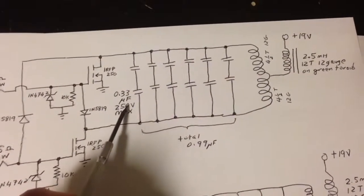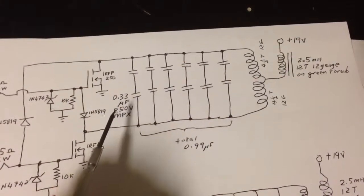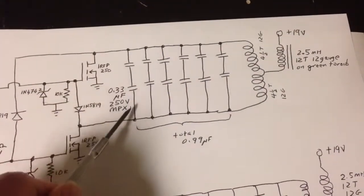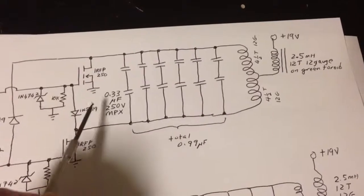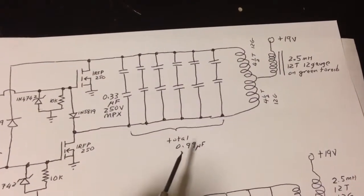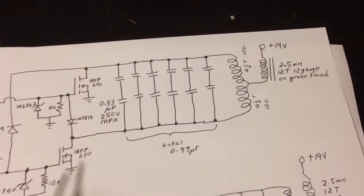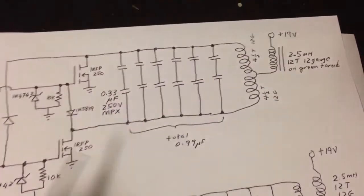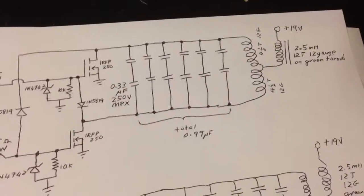These are 0.33 microfarad capacitors, or you can use 0.47 microfarad capacitors, and I've connected them series parallel. So if it's 0.33, the total capacitance is 0.99 microfarads, and if it's 0.47 microfarads for each capacitor, then it's three times 0.47 microfarads for the total capacitance.